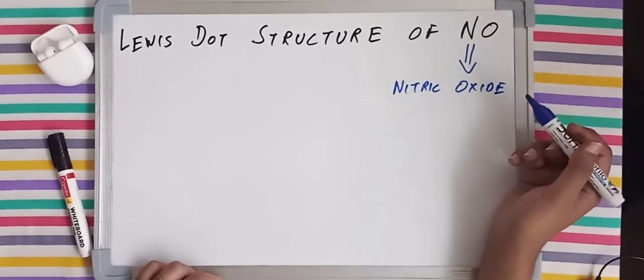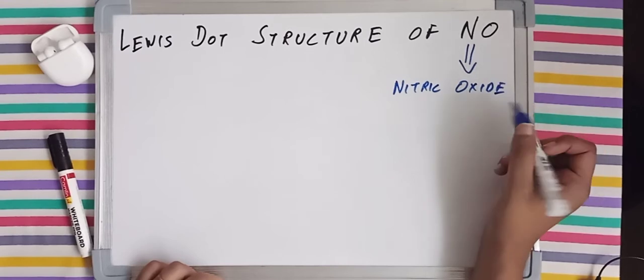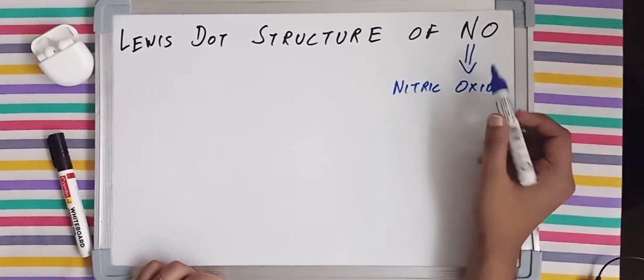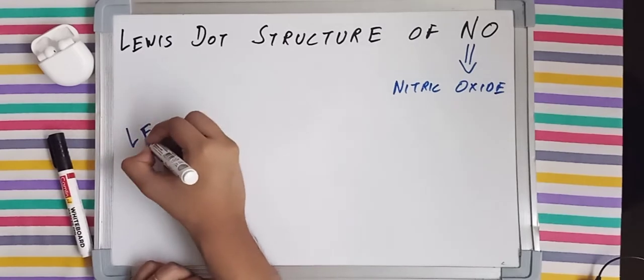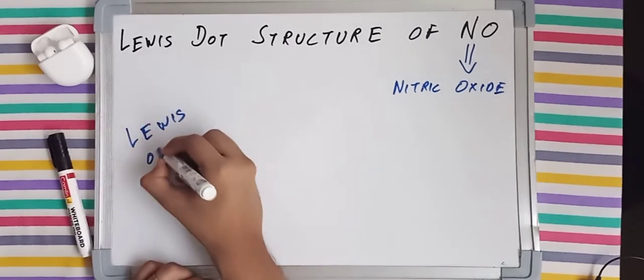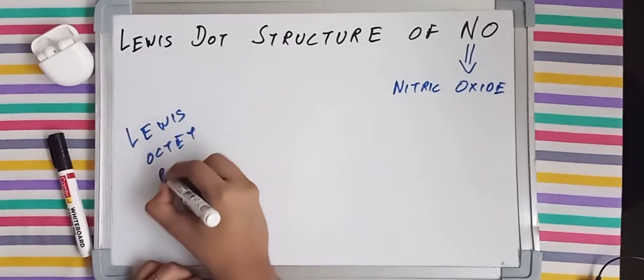Now beforehand, before proceeding to draw the structure of NO, I want to state that this particular molecule is an exception to the Lewis octet rule.